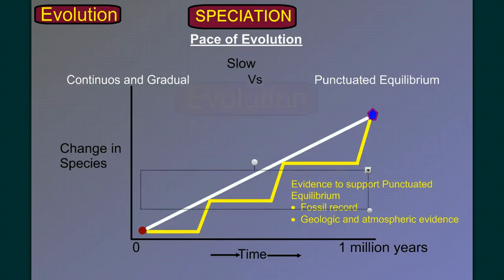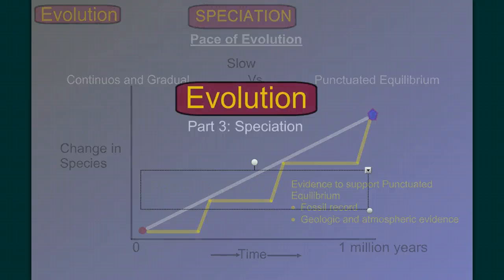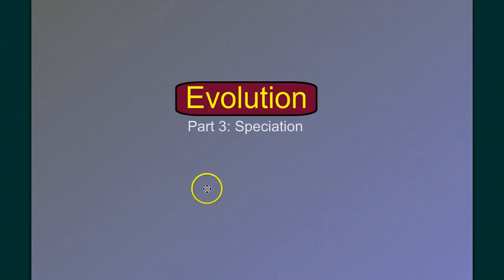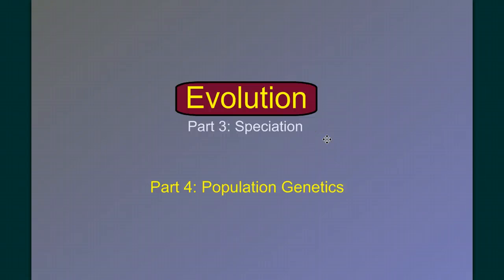That brings us to the end of section three on speciation. Come back for section four where we talk about population genetics. If you have any questions, leave them in the comments section below the video — I hope you learned something.